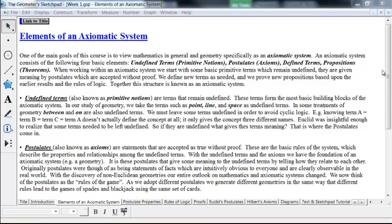Axiomatic systems have four basic elements: undefined terms, also known as primitive notions; postulates, also known as axioms; defined terms; and propositions, also known as theorems.